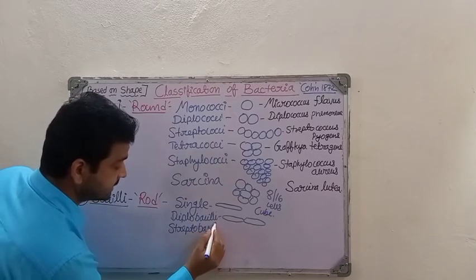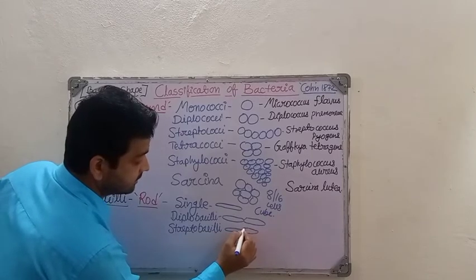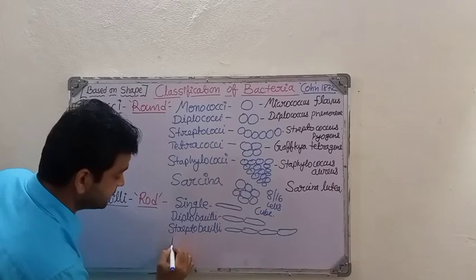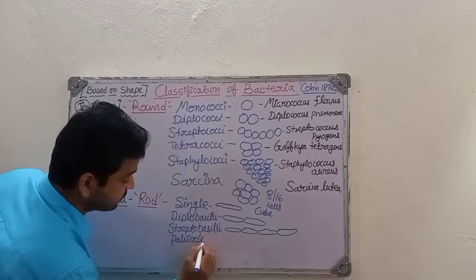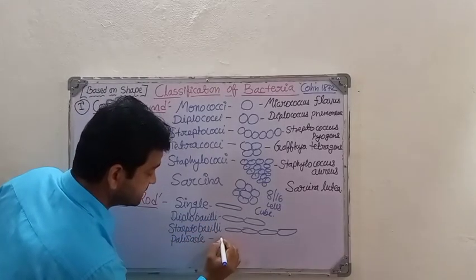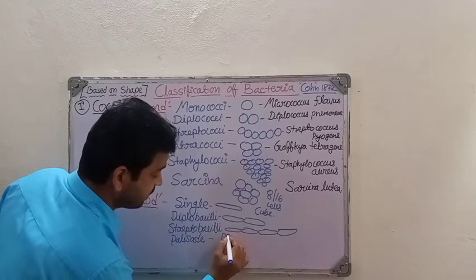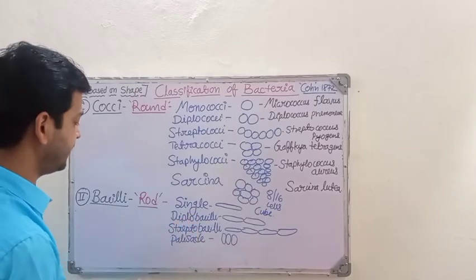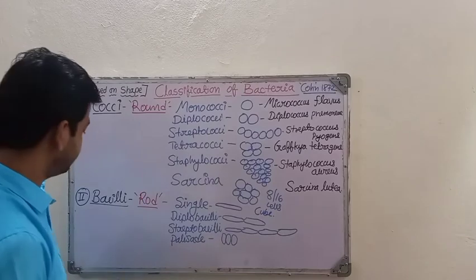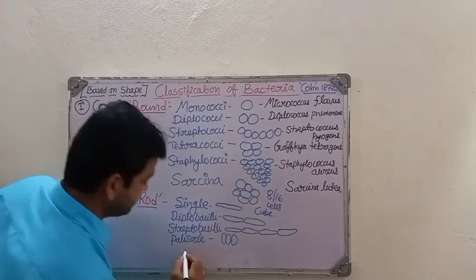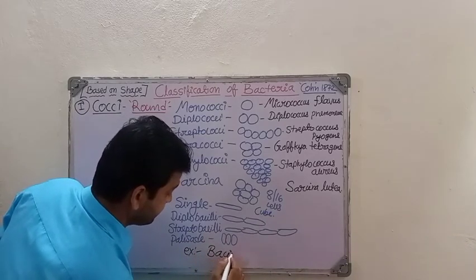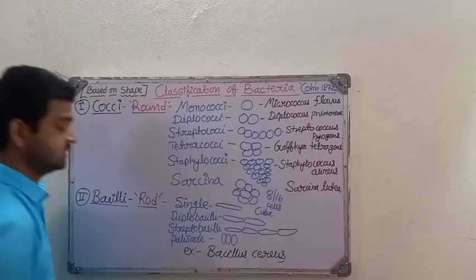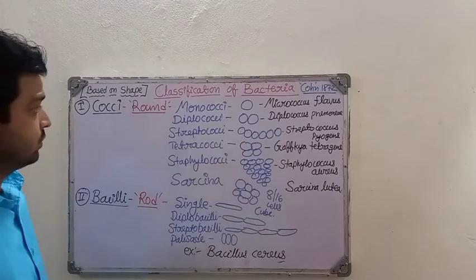Streptobacilli means rod-shaped bacteria forming a chain-like structure, similar to streptococci. Then palisade bacilli — as the name indicates, the bacteria are arranged like palisade cells seen in leaf histology. An example we can take for bacilli is Bacillus cereus.